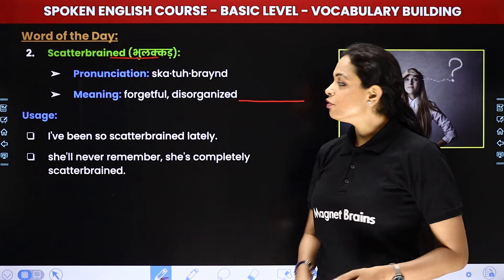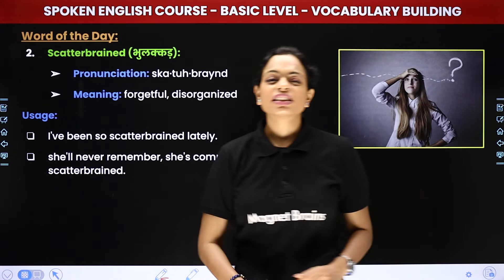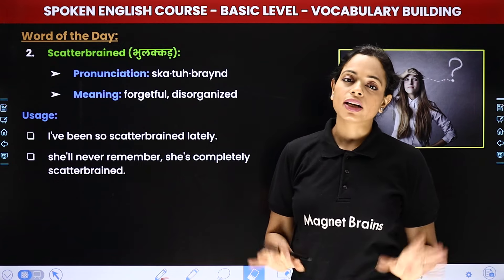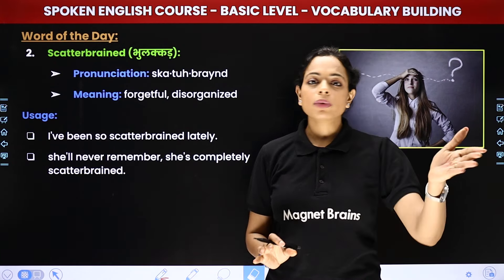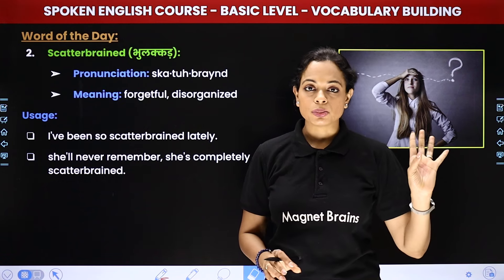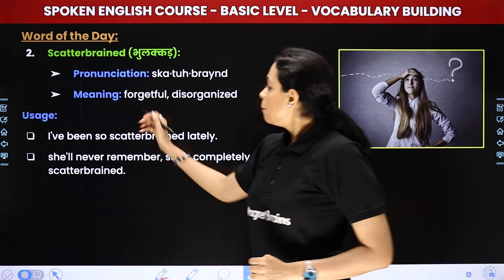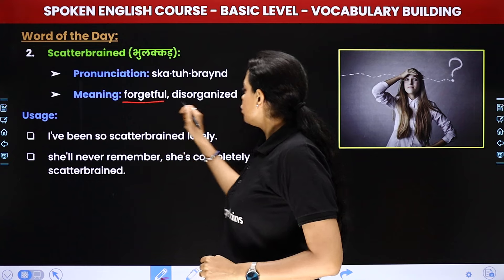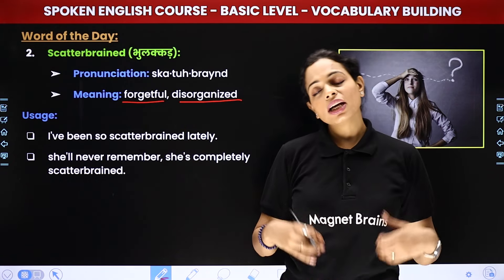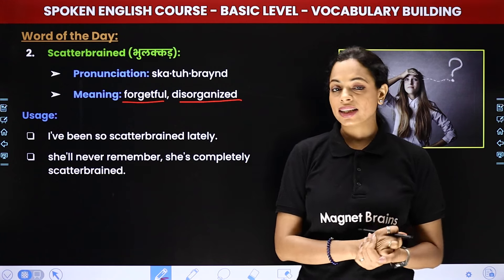The second word is very interesting — 'scatterbrained'. Scatterbrained ka matlab hota hai bholakkar. Kyar usko maddo chaabiyan — she is like completely scatterbrained, usko chaabiyan yaad nahi, wo khojegi. Meaning: forgetful or disorganized. Koi jo bilkul organized nahi hai, jo har cheez hamisha bhool jata hai, usko hum scatterbrained kehte hai.